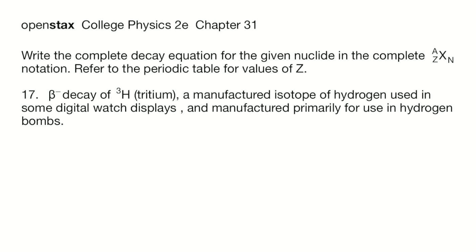The beta minus decay equation is as follows. We use the complete nuclide notation, and I'll highlight it, where A is the mass number, which is the number of nucleons, so protons plus neutrons. Z is the number of protons, N is the number of neutrons, and X represents the nuclide.